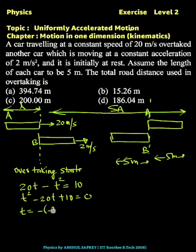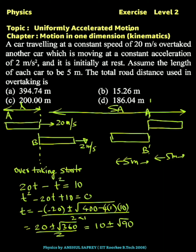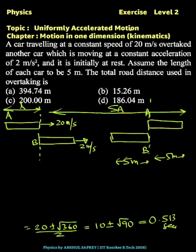Substituting: t equals 20 plus or minus root of 400 minus 4 times 1 times 10, divided by 2 times 1. This gives 20 plus or minus root 360, divided by 2, which simplifies to 10 plus or minus square root of 90. We get two answers; the smaller value close to 0.513 seconds is the one we consider.